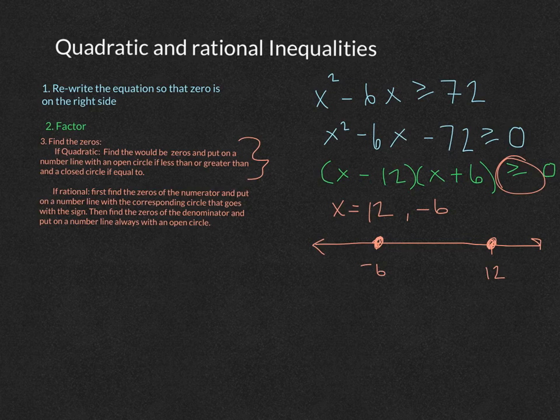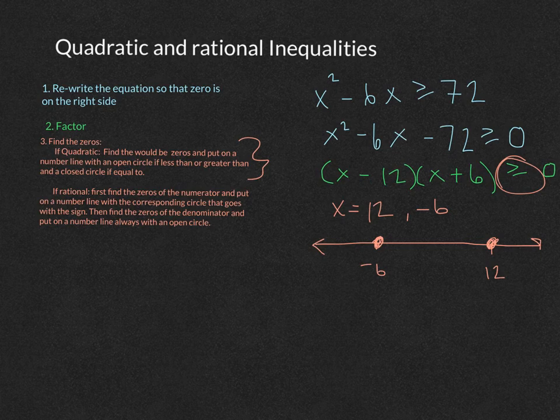So we take our zeros, put them on the number line, and we have closed circles because of the greater than or equal to sign.